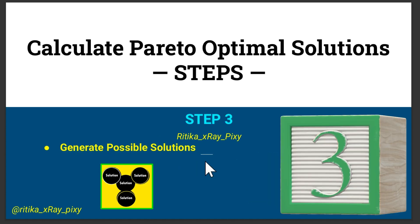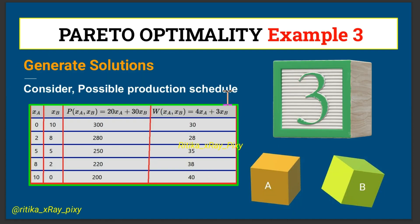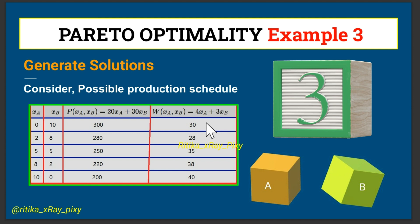Now we generate possible solutions using any optimization technique. Here we take a few possible production schedules: when xA = 0, xV = 10, profit = 300, waste = 30. When xA = 2, xV = 8, profit = 280, waste = 28. We will use different possible values to evaluate all cases.